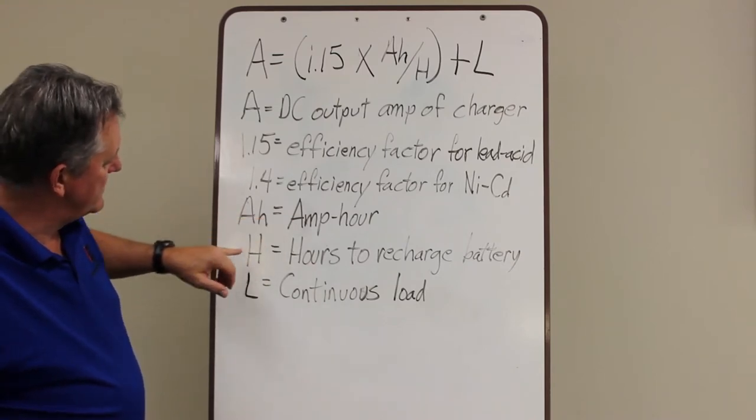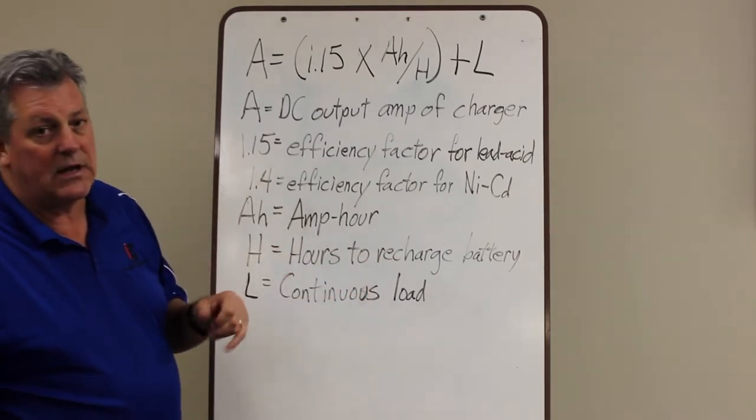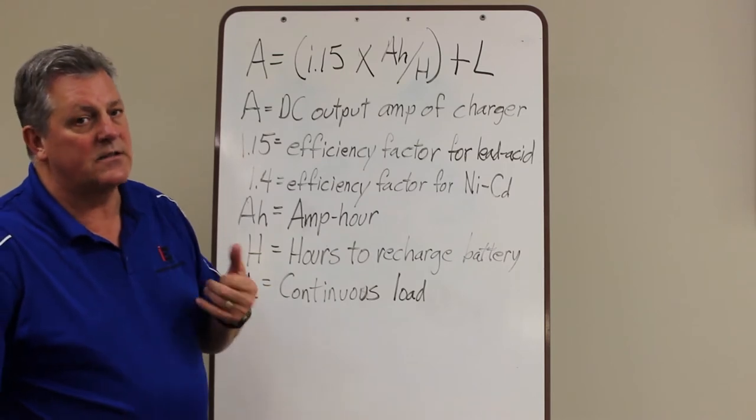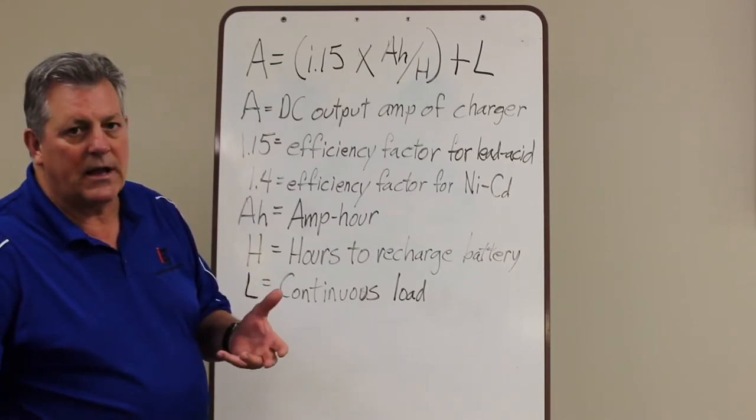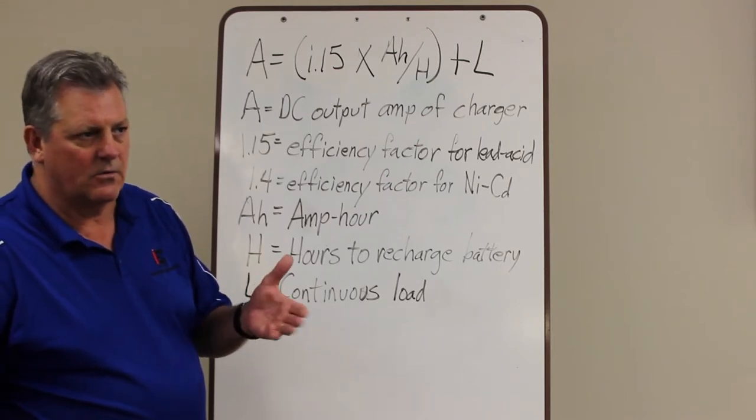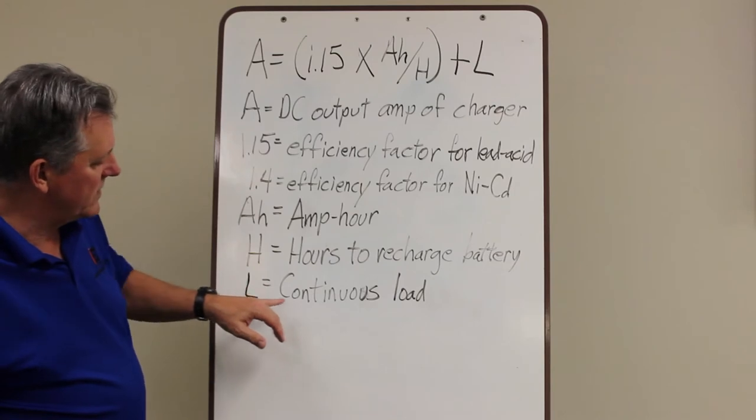AH means amp hours. H is hours to recharge the battery and that can be anywhere from 8 to 24. I've seen as many as 48 but generally they run at 8. That's the minimum. You can't charge a lead acid battery any faster than 8 hours. It's a chemical reaction so we work with 8 hours as a minimum. And then L would be the continuous load.